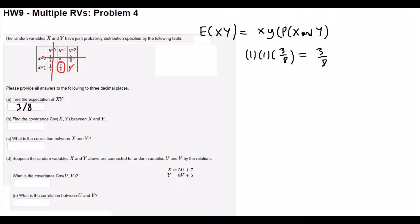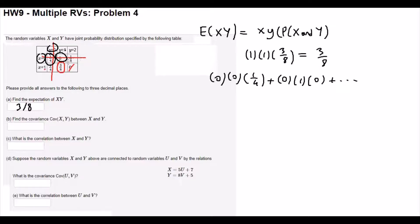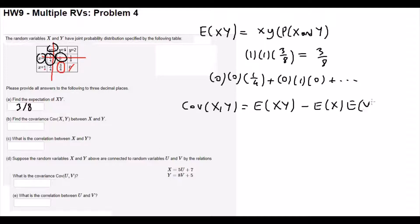Let me do one sample row for you to understand better. For the first cell, we multiply x value which is 0, times y value which is 0, times 1/4. Plus the second cell, 0 times 1 times 0, and so on — you need to visit each cell. Now we are going to find the covariance of x, y. Covariance of x, y by definition is their expectation together minus the product of their expectations separately. We already found expectation of xy which is 3/8. Now we need to find expectation of x and expectation of y separately.